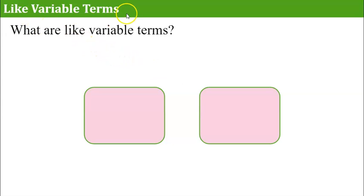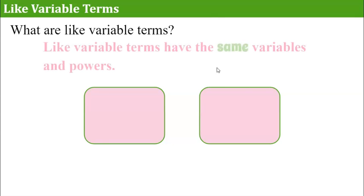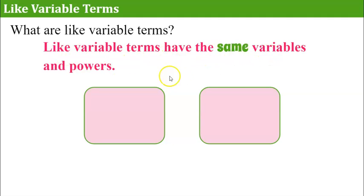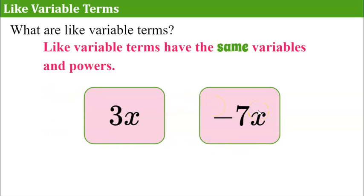First let's review like variable terms. I'm going to ask you to jot down what are like variable terms and what you think two like variable terms are. Go ahead and pause and come back when you're done. Welcome back! So first let's understand that like variable terms have the same variables and the same powers. Here's an example: 3x and negative 7x are like variable terms.